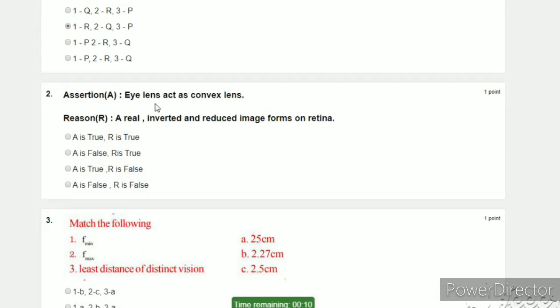Next question. Eye lens acts as convex lens. It is Assertion. Next, here we have Reason. How? A real, inverted, and reduced image forms on retina. Here you can see retina. A real, inverted, and reduced image forms on retina. This is the reason.